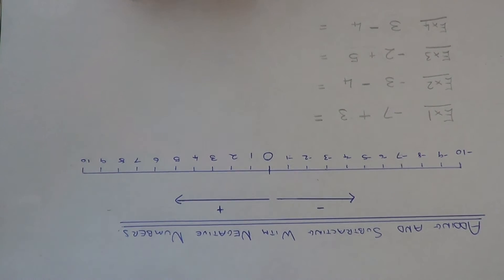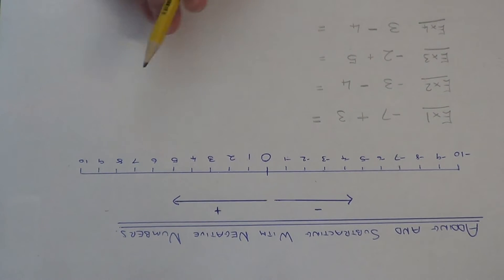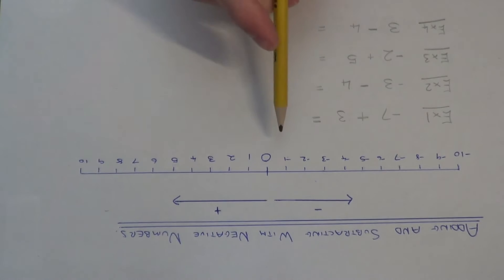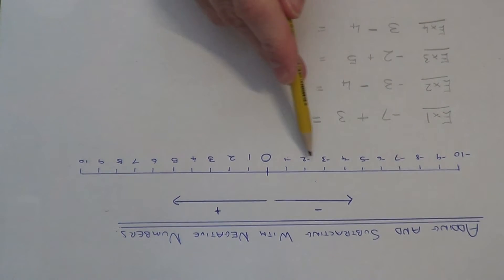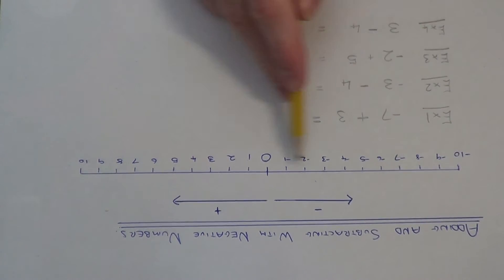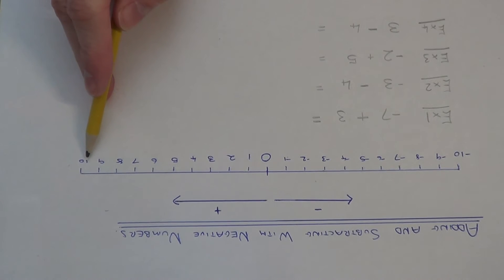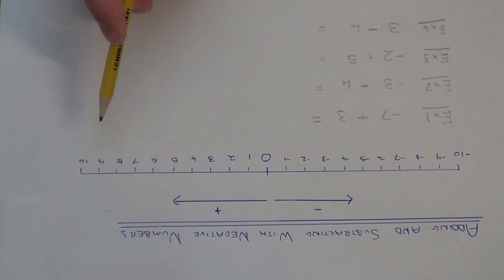Today I am going to show you how to add and subtract with negative numbers using a number line. First of all, make sure you have your number line drawn out correctly from minus ten up to plus ten. If you have bigger numbers you need to extend the number line.